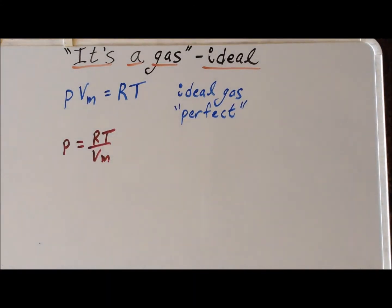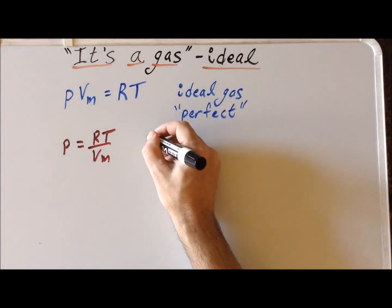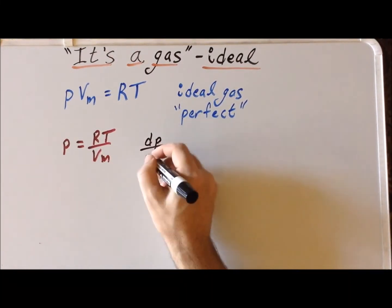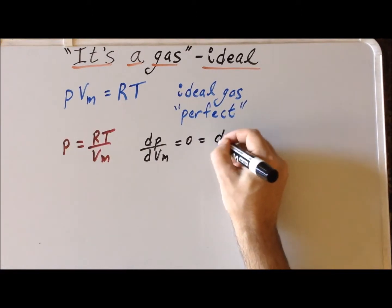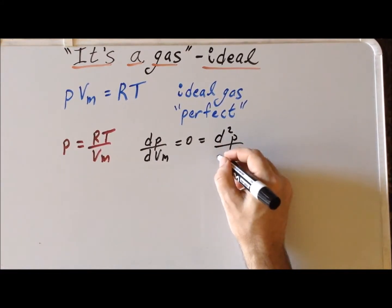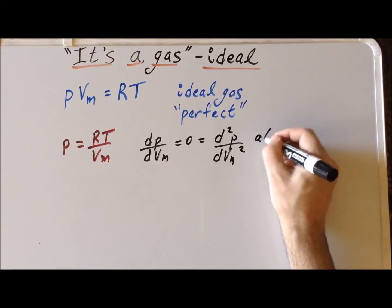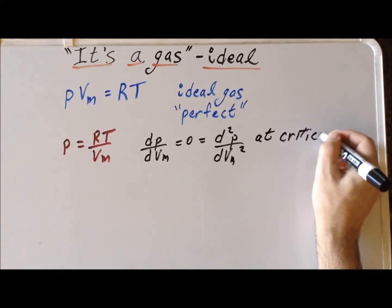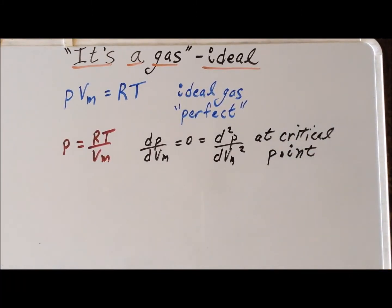We can also verify algebraically that an ideal gas does not exhibit this so-called critical behavior. To exhibit critical behavior, the first derivative of the pressure with respect to the molar volume must equal zero, and the second derivative of the pressure with respect to the molar volume must also equal zero. Both of these conditions hold true at the critical point.